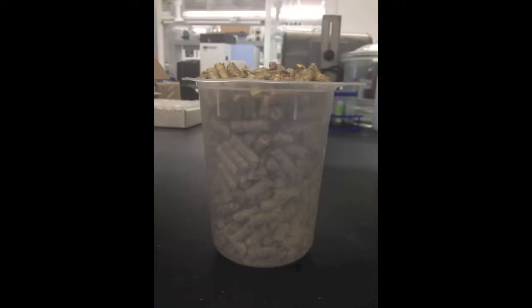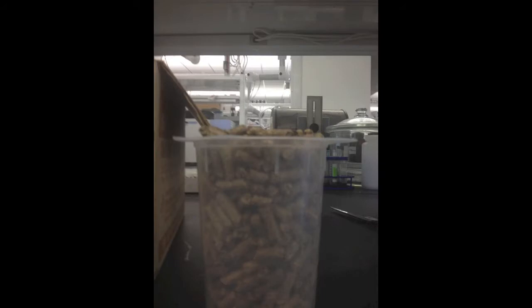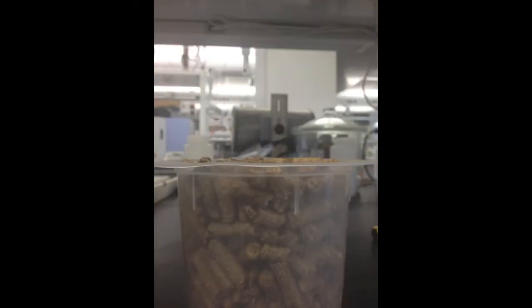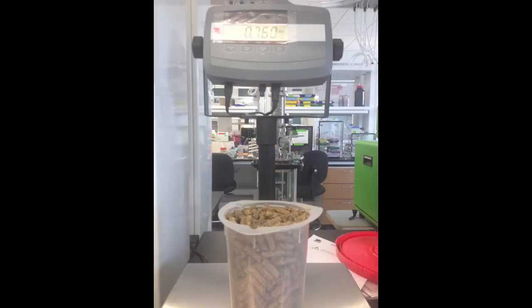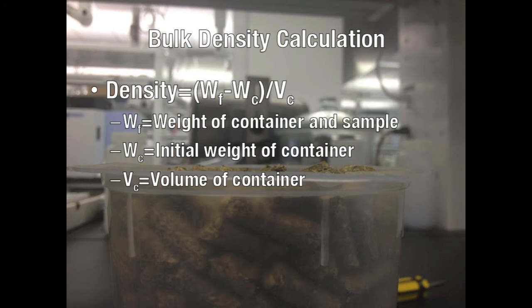Next, dry the container and fill it to capacity with a densified biomass. Drop the container onto a hard surface from a height of two to three inches several times to allow the material to settle. Then add additional sample to the container and use a straight edge to strike off excess. The material should be level with the top edge of the container. Weigh the container and material. To calculate bulk density, use the equation: weight of the container and sample minus weight of container, divided by the volume of the container.